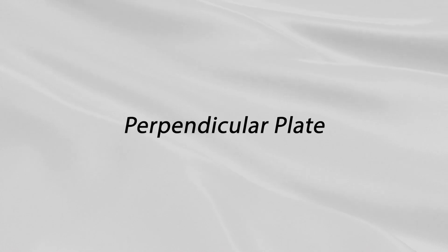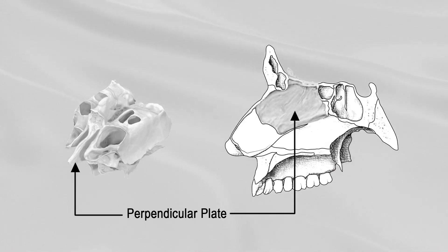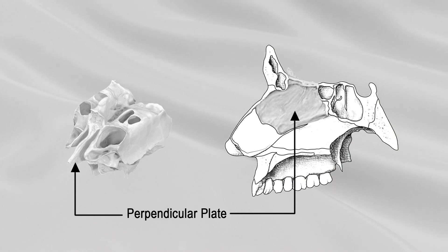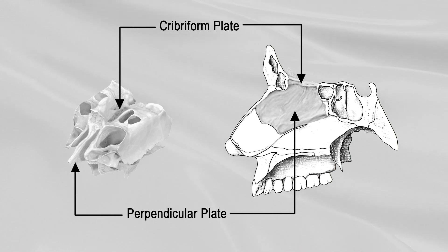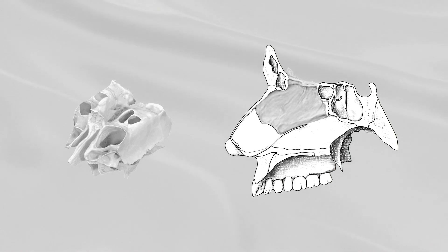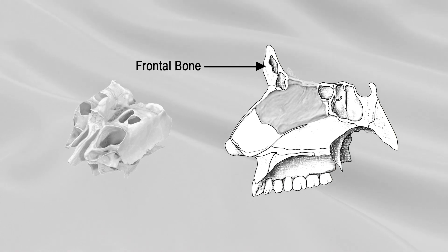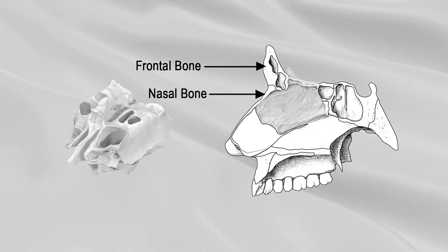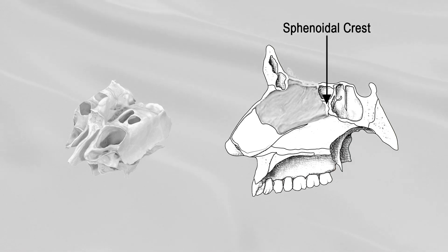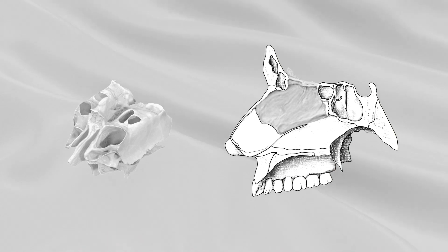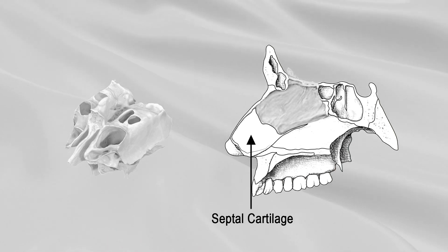Perpendicular plate. The perpendicular plate is a polygonal, flattened, and thin lamina, which descends from the undersurface of the cribriform plate and forms a part of the nasal septum. The anterior border articulates with the nasal spine of the frontal bone and the crest of the nasal bones. The upper half of the posterior border articulates with the sphenoidal crest and the lower half with the vomer. The inferior border attaches to the septal cartilage of the nose.